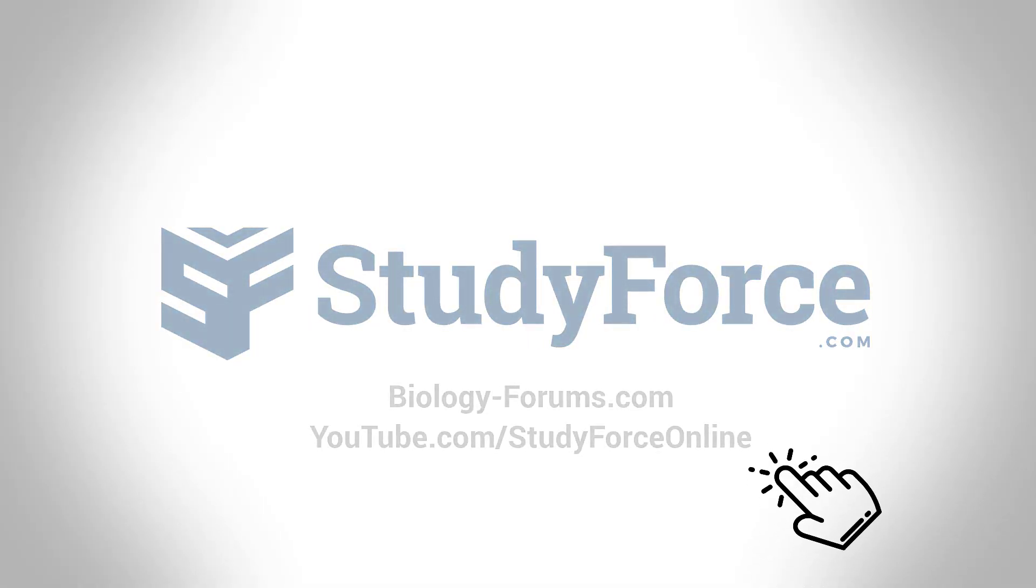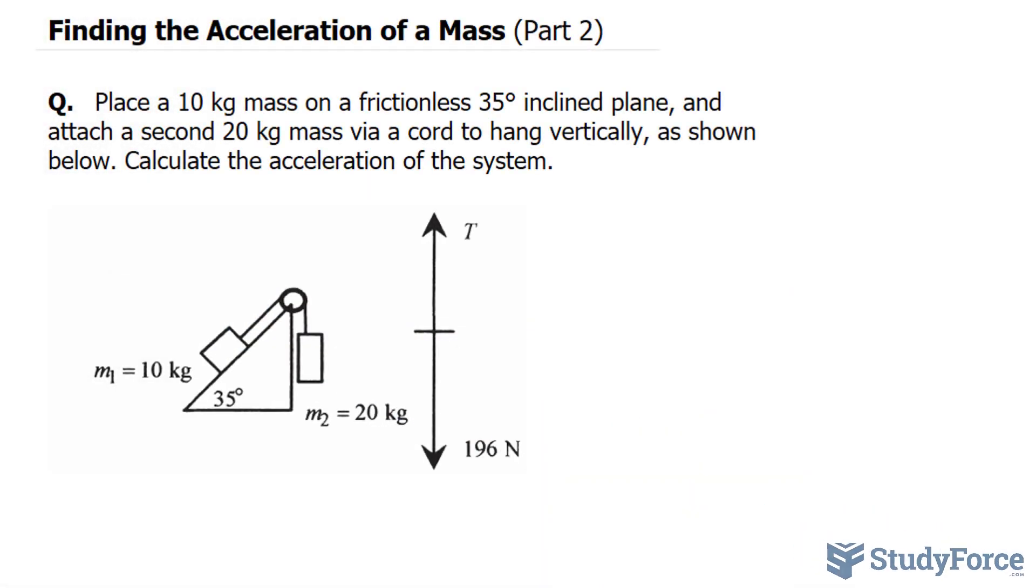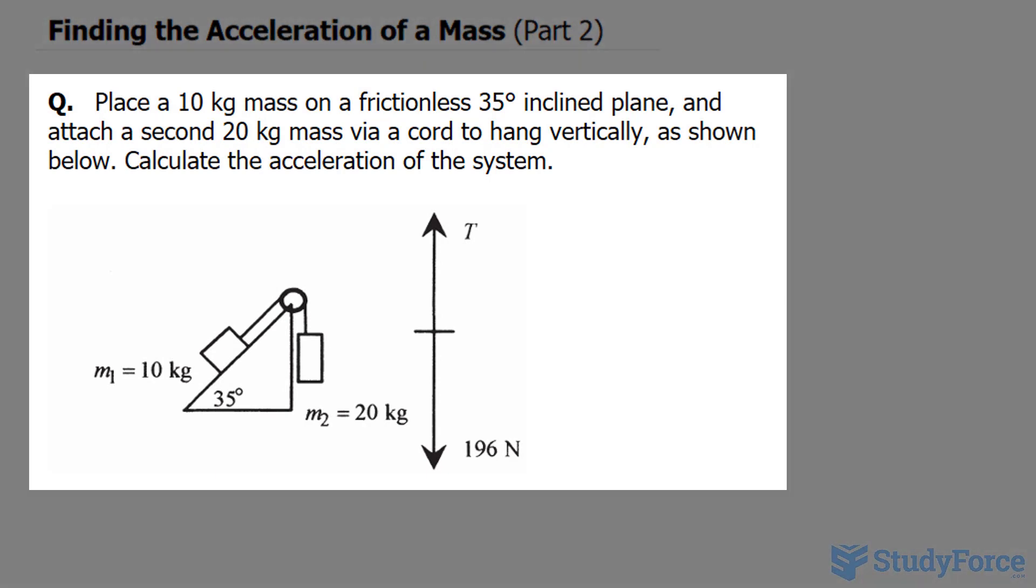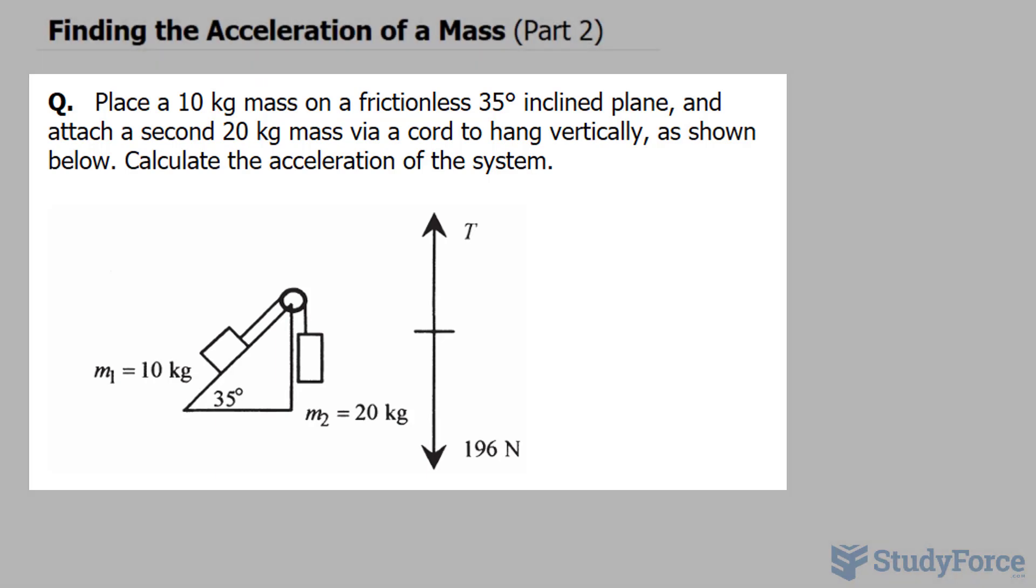Welcome back to part 2 of our series on finding the acceleration of a mass due to forces. This time the question reads: place a 10 kg mass on a frictionless 35 degree incline plane and attach a second 20 kg mass via a cord to hang vertically as shown below. Calculate the acceleration of the system.